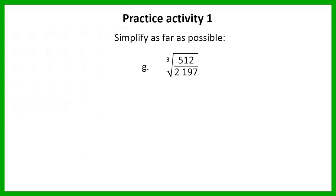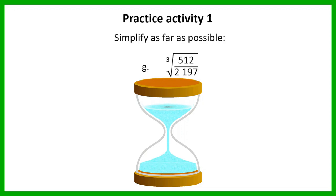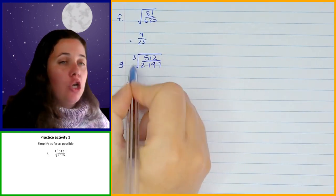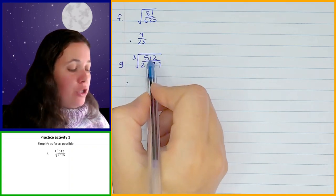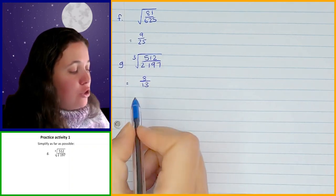Question G: here we've got the cube root of 512 over 2197. It's not a mixed number, so we're going to go straight ahead and do our cube rooting. The cube root of 512 is 8, over the cube root of 2197, which is 13. So that's what you should have got for question G.